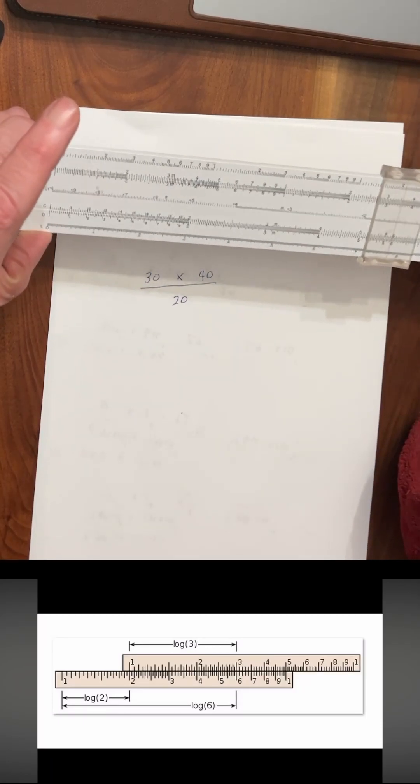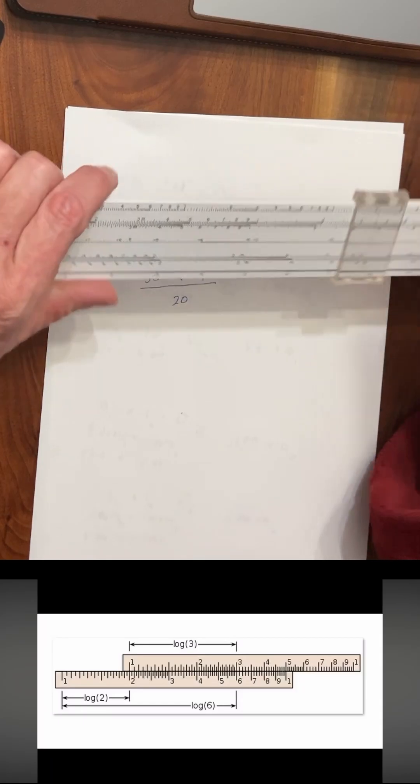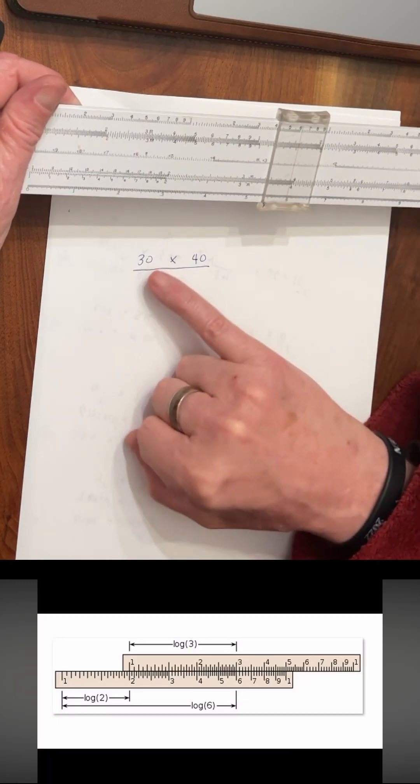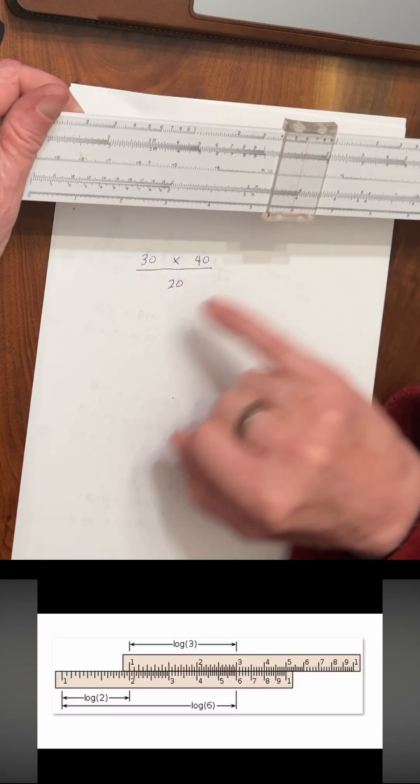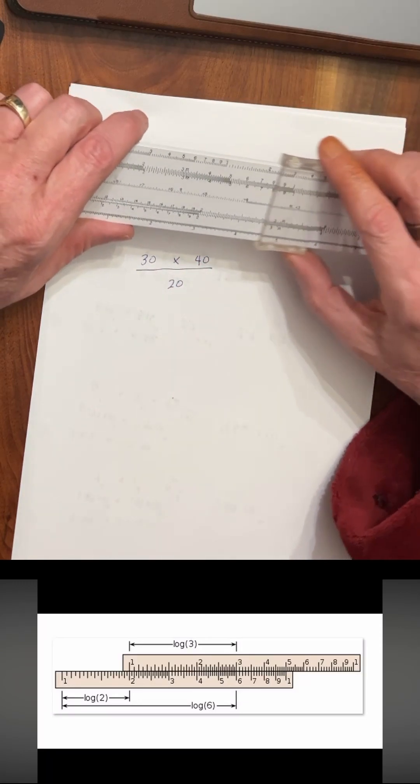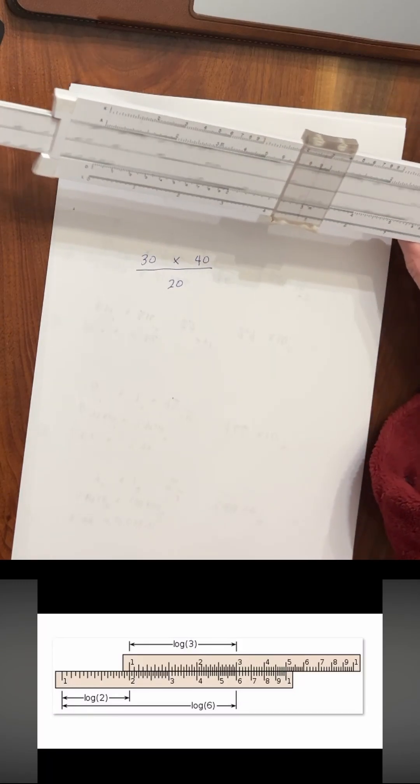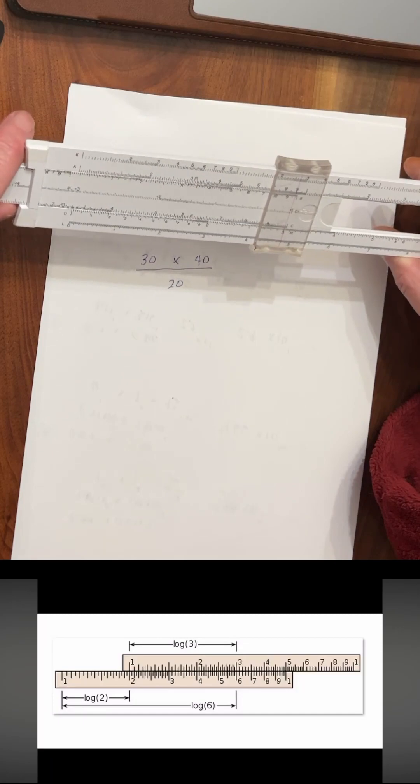We want to pay attention to the movements of the slide and of the cursor. Now the first time what we're going to do is we're going to multiply 30 by 40 and then we'll divide by 20. So we'll come out here to 30. Okay, so we have to move to the index. That's one move of the slide.